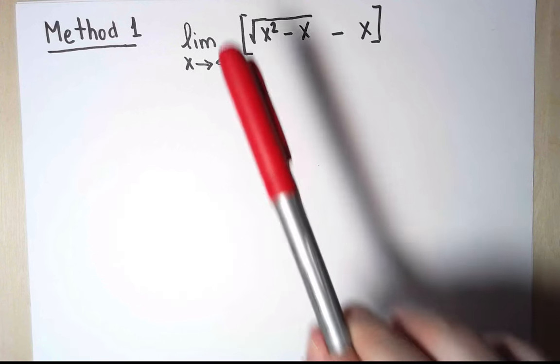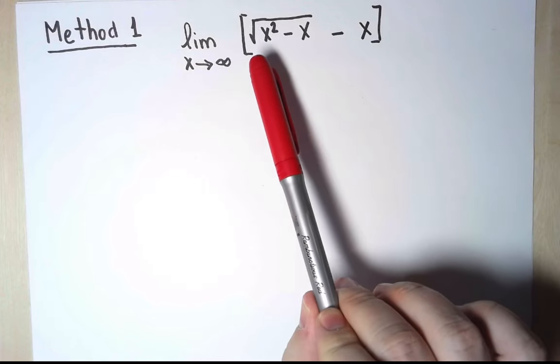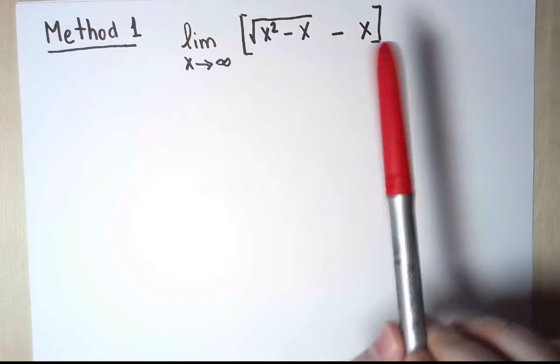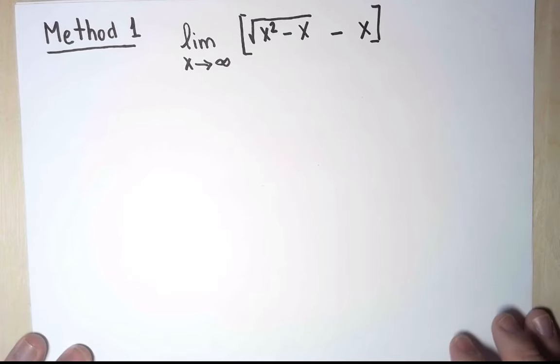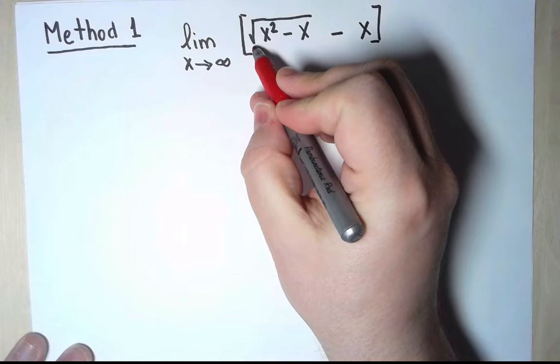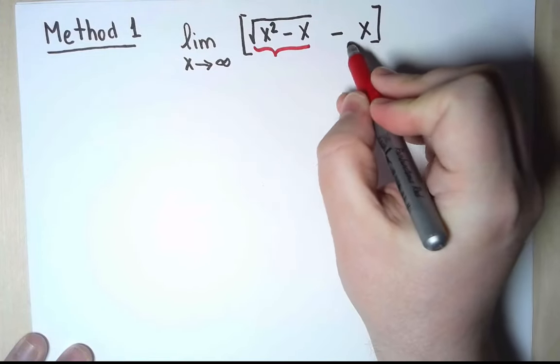I want to compute the limit as x approaches infinity of the square root of x squared minus x, all of that minus x. First, let's look and see what type of indeterminate form we have, if any. I'm going to look at this as the difference of two functions, this function and this function.